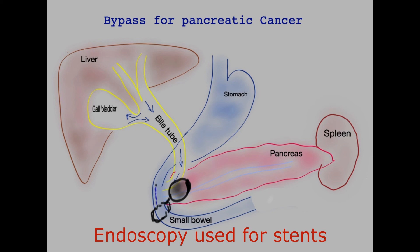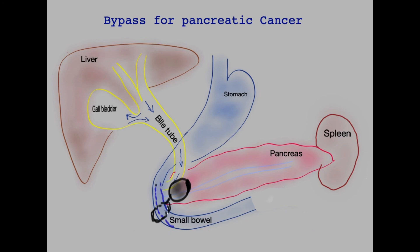Here I've drawn a metal stent for clarity which springs open the duodenum. As you can see, if there is already a metal stent in the bile tube itself, that could cause technical difficulties in placing two metal stents side by side into the small bowel. That said, metal stents for gastric outlet obstruction secondary to pancreatic cancer are a reasonable strategy in patients who are not fit for surgery.